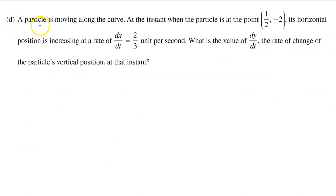Part D: A particle is moving along the curve. At the instant when the particle is at the point (1/2, -2), its horizontal position is increasing at a rate of dx/dt equals 2/3 units per second. What is the value of dy/dt, the rate of change of the particle's vertical position at that instant?